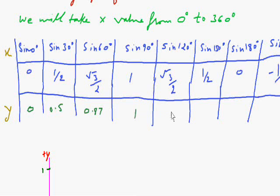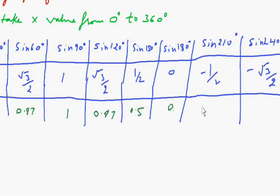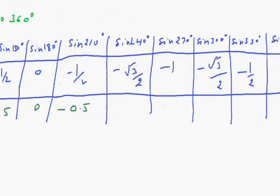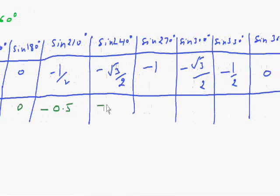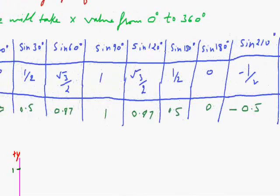Then 1 divided by 2 is 0.5. It will be minus 0.5, then minus 0.87, then minus 1, then minus 0.87 again, then minus 0.5, and then 0. Now we just make the graph.